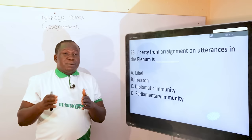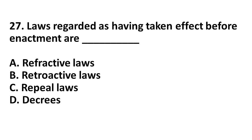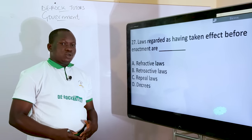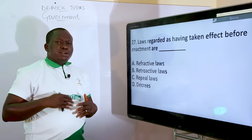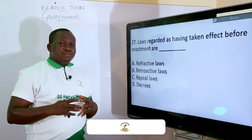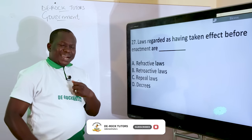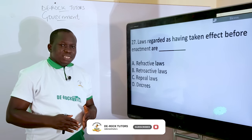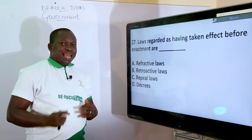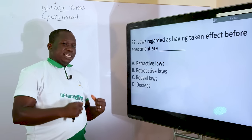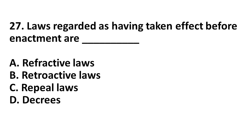Next question: laws regarded as having effect before enactment are known as what? These types of laws are associated with military, dictatorial, tyrannical, or despotic regimes. Retroactive laws are laws that can be promulgated or enacted today but given a backdated effect — such laws can be used to punish an offender who committed a crime last year, even though the law was enacted today. It is called a backdated law or a retroactive law. The correct answer is B, retroactive laws.